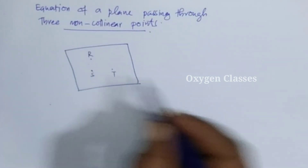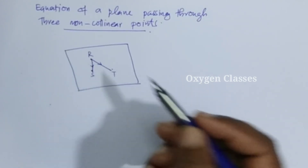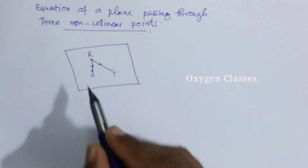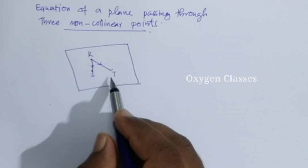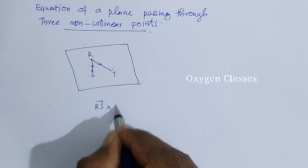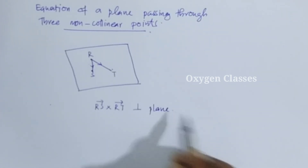We need to find two vectors: RS and RT. These two vectors lie in the plane. The plane is perpendicular to a vector which is the cross product RS cross RT. So the normal to the plane is the vector RS cross RT.